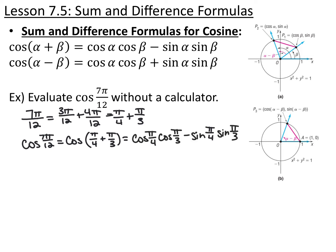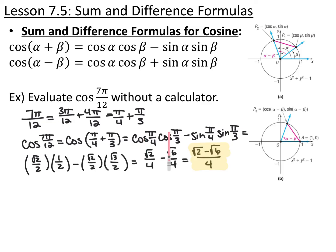The cosine sum formula uses the same trig function multiplied together with the opposite sign in the middle. So cosine of π/4 plus π/3 equals cosine of π/4 times cosine of π/3, minus sine of π/4 times sine of π/3. Cosine of π/4 is √2/2, cosine of π/3 is 1/2, sine of π/4 is √2/2, and sine of π/3 is √3/2. So √2/2 times 1/2 is √2/4, and √2/2 times √3/2 is √6/4. Subtracting gives (√2 − √6)/4.